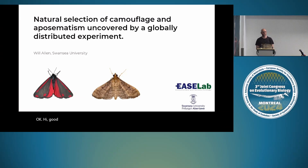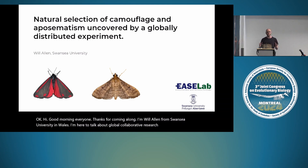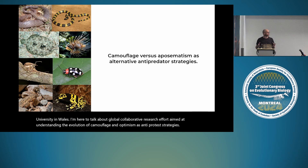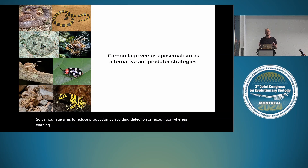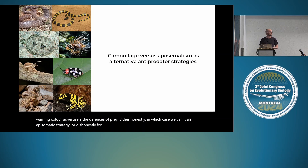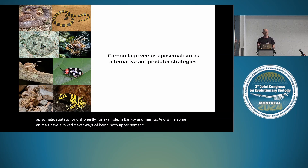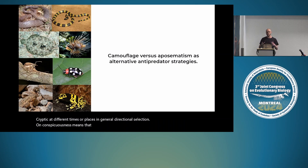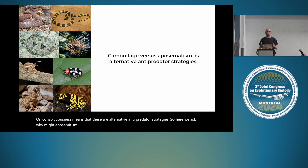I'm Will Allen from Swansea University in Wales. I'm here to talk about a global collaborative research effort aimed at understanding the evolution of camouflage and aposematism as anti-predator strategies. Camouflage aims to reduce predation by avoiding detection or recognition, whereas warning color advertises the defenses of prey—honestly in aposematic strategies, or dishonestly in Batesian mimics. Directional selection on conspicuousness means these are generally alternative anti-predator strategies, so we ask: why might aposematism or camouflage evolve in different circumstances?